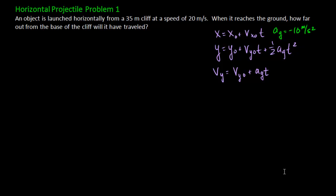In this video we will be tackling the common problem of a horizontally launched projectile. The problem states an object is launched horizontally from a 35 meter cliff at a speed of 20 meters per second. When it reaches the ground, how far out from the base of the cliff will it have traveled?